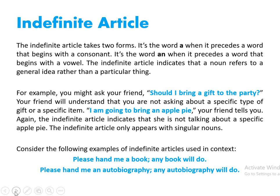For example, you might ask your friend, 'Should I bring a gift to the party?' Your friend will understand you are not asking about a specific type of gift. 'Am I going to bring an apple pie?' — again, the indefinite article indicates she is not talking about a specific apple pie. The indefinite article only appears with singular nouns. For example: 'Please hand me a book — any book will do.' 'Please hand me an autobiography — any autobiography will do.' In both cases we use the singular number.